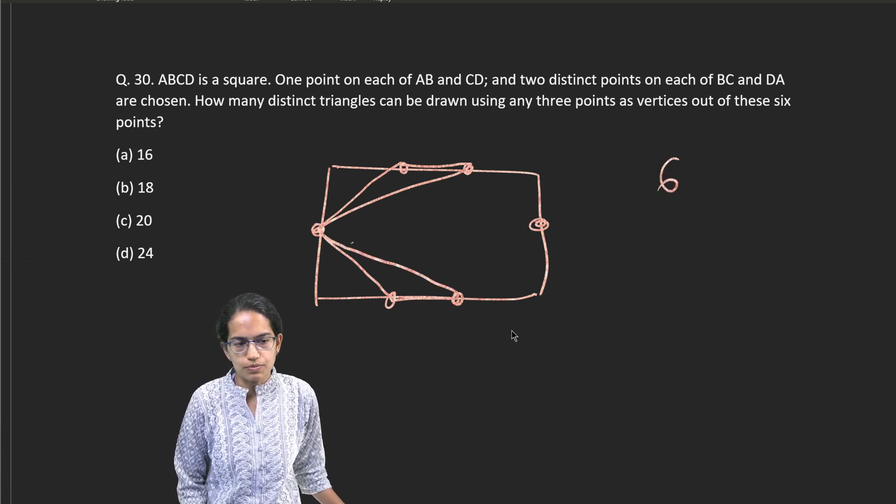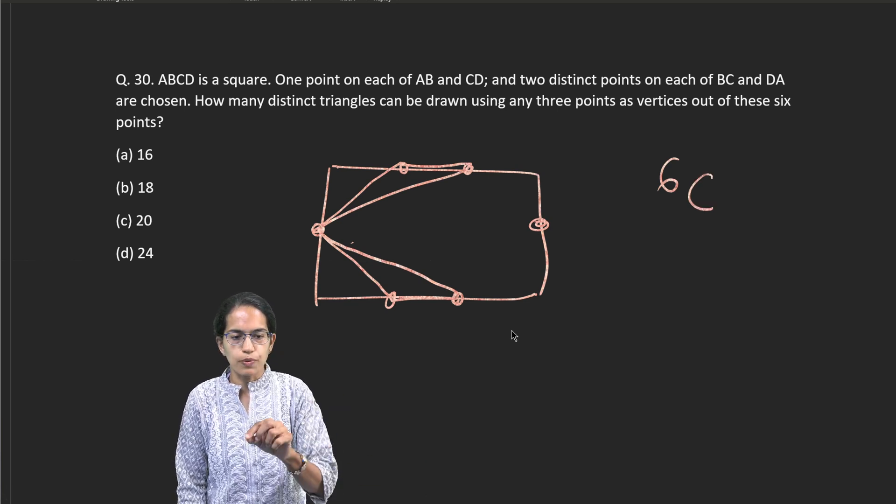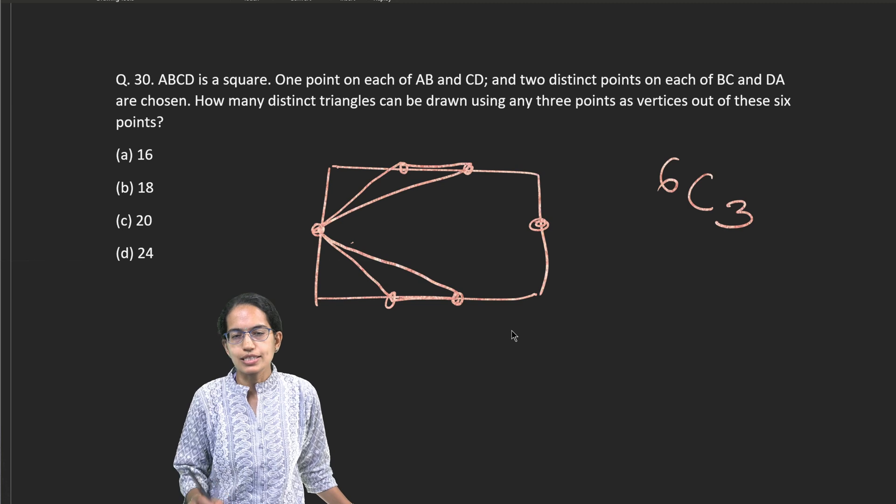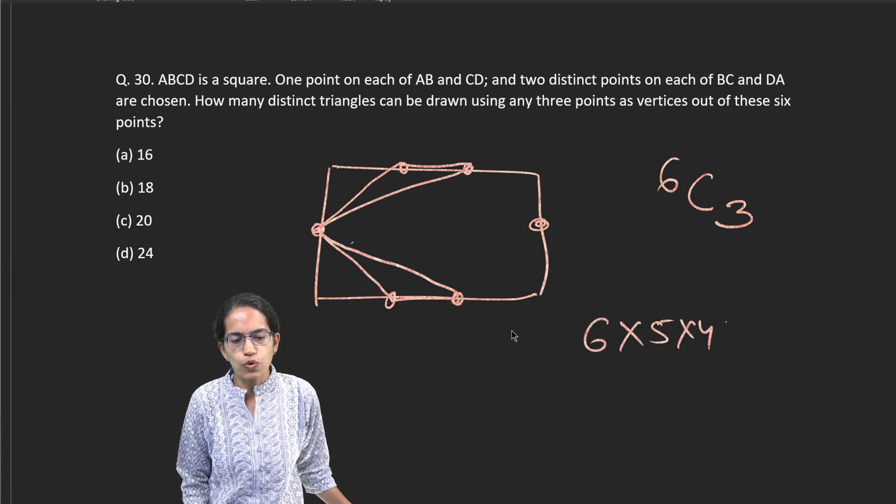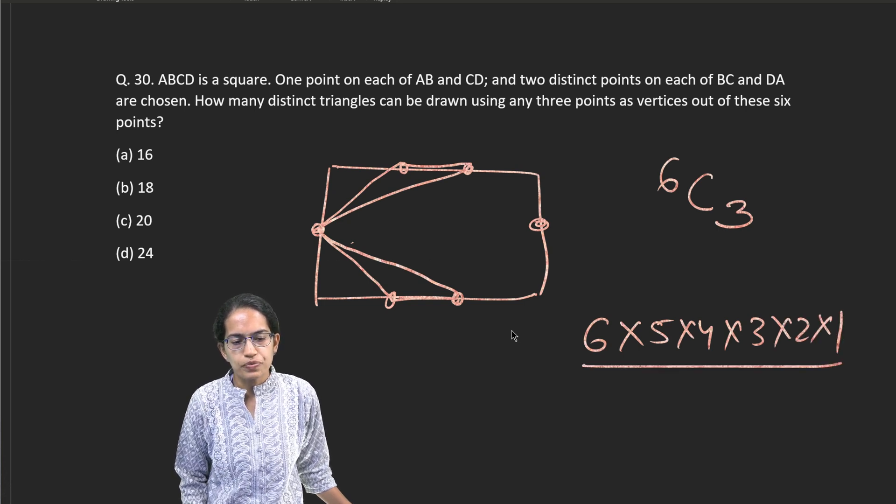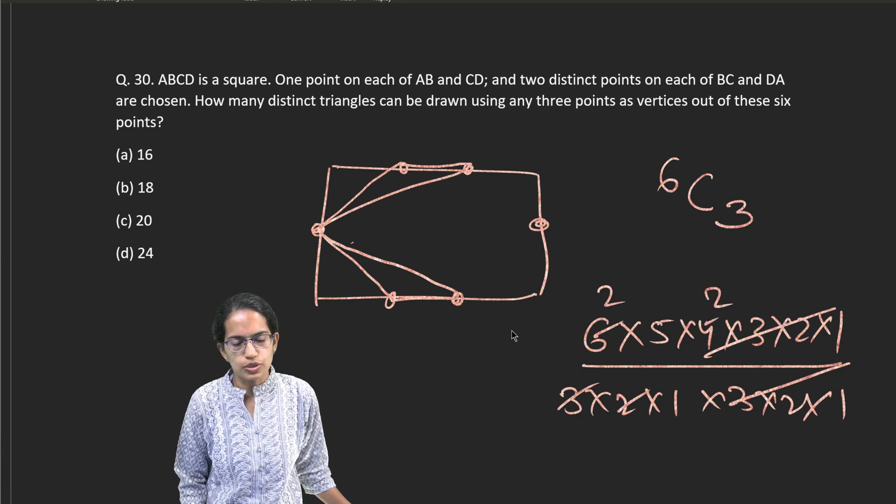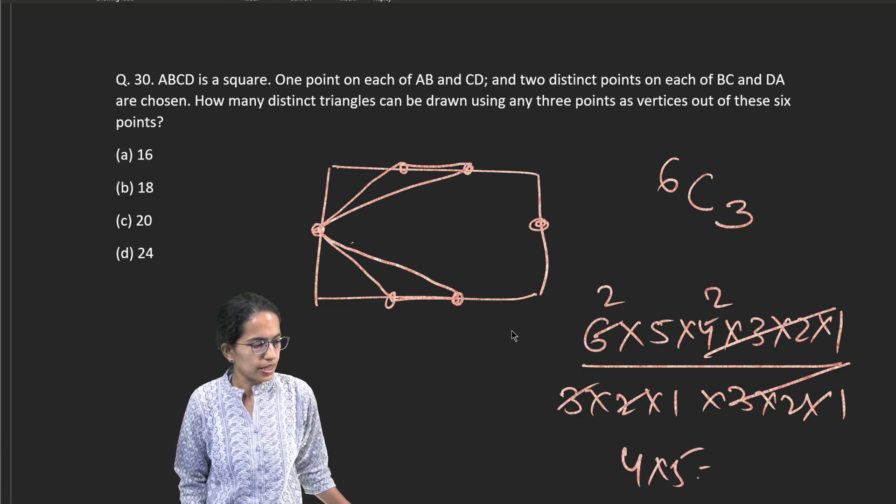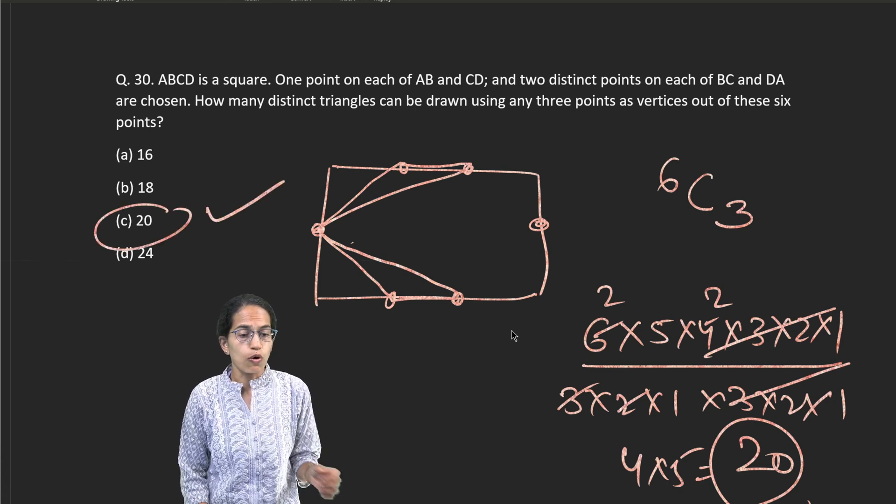Six vertices and you have to join three points. So 6C3 that is 6 into 5 into 4 into 3 into 2 into 1 divided by 3 into 2 into 1 multiplied by 3 into 2 into 1. So this and this cancels out and I cancel this as 2. So that's 4 into 5, that gives me 20. So I have 20 ways in which it could be formed.